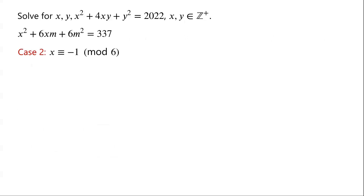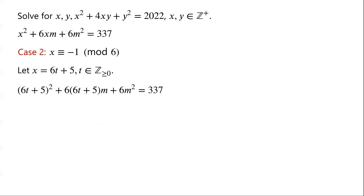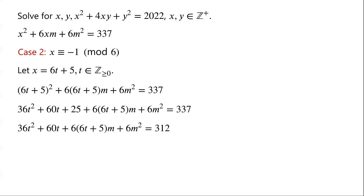Case 2: x is congruent to negative 1 modulo 6. So we let x equal 6t plus 5, where t is a non-negative integer. Substituting x equal 6t plus 5 in the equation, we have (6t plus 5) all squared plus 6 times (6t plus 5) times m plus 6m squared equals 337. Expanding (6t plus 5) squared gives 36t squared plus 60t plus 25. Moving 25 to the right side: 337 minus 25 equals 312. Dividing by 6, we have 6t squared plus 10t plus (6t plus 5) times m plus m squared equals 52.